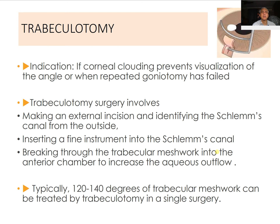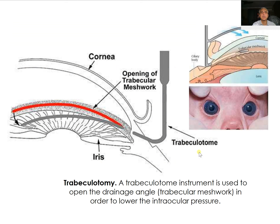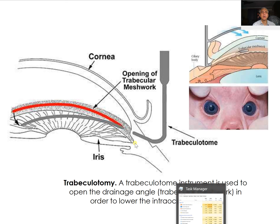Trabeculotomy is indicated if corneal clouding prevents visualization of the angle or when repeated goniotomy has failed. It involves making an external incision, identifying Schlemm's canal from the outside, inserting a fine instrument called a trabeculotome into the canal, and breaking through the trabecular meshwork into the anterior chamber to increase aqueous outflow. Typically 120 to 140 degrees of trabecular meshwork can be treated by trabeculotomy in a single surgery.